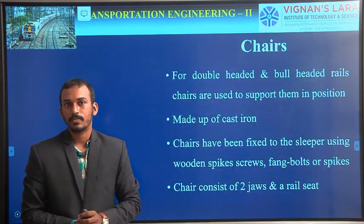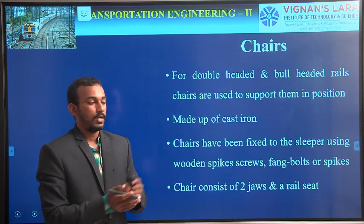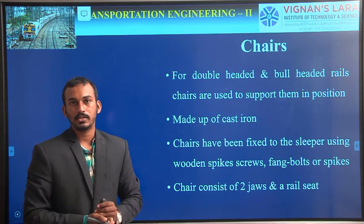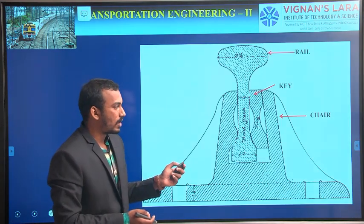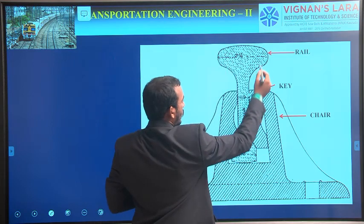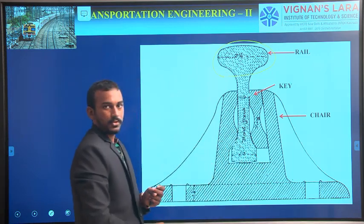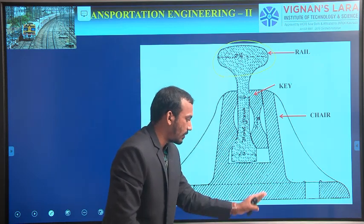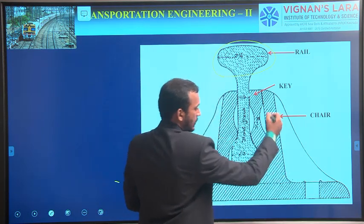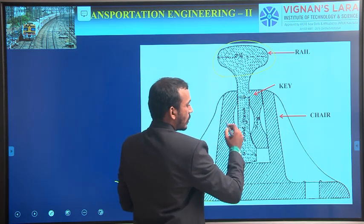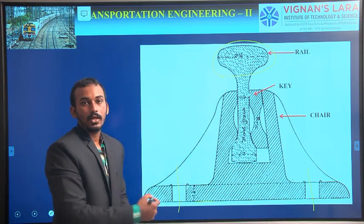The next one is chairs. These are the fastenings used to connect bull-headed or double-headed rails to the sleepers. If you have flat-footed rails, there is no need for chairs. This is a bull-headed rail — having a larger head and a smaller foot. We cannot directly connect them to the sleepers, so we use a chair arrangement. The chair holds the bull-headed rails, and here we use bolts to fix chairs to the sleepers.